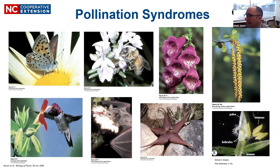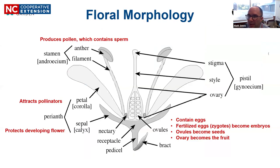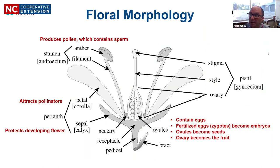A paper on pollination syndromes will be added to the master naturalist website if you want to read more. The key today is to become familiar with the structures of a flower, because these are the most complex parts of an angiosperm. Complexity means that if there are similar structures among taxa, the default assumption is that they are related to each other — though that's not always the case.